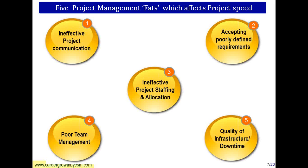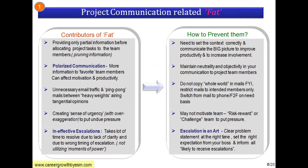The fifth factor is the quality of infrastructure and downtime. For example, if a person is highly energetic and brilliant but has a very old PC — a Pentium 3 with very little RAM that keeps hanging — it's like a horse working with a donkey. Both the machine and the human being need to have the same level of speed and energy.